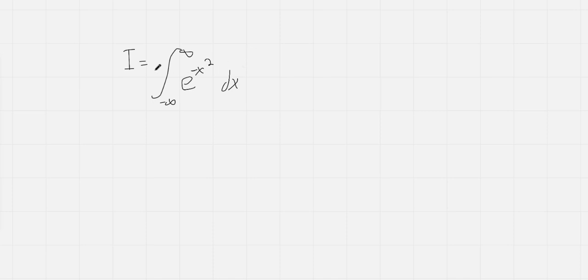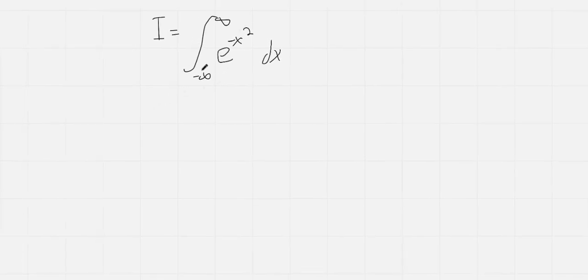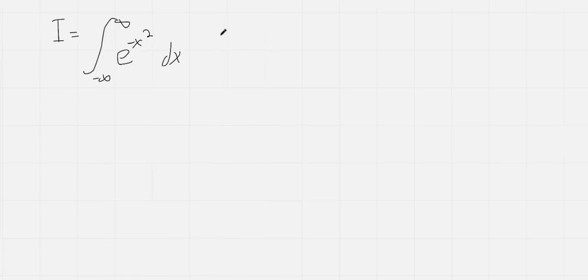So we can actually use polar integration to evaluate this. What I'm going to do is rewrite this integral, but everywhere that there's an x, I'm going to write a y instead. So e to the negative y squared dy. And what we can do is multiply these integrals together, and we'll get I squared.